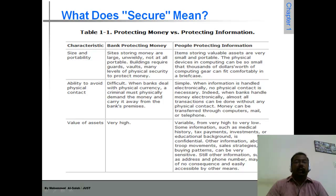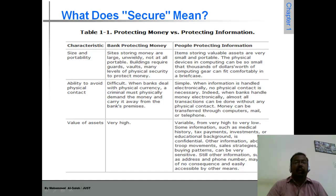Next is the ability to avoid physical contact. In case of money it is very difficult. When the bank stores physical currency, a criminal must physically demand the money and carry it away from the bank's premises, so it is a difficult task. In case of information, it is simple. When information is handled electronically, no physical contact is necessary. Indeed, when banks handle money electronically, almost all transactions can be done without any physical contact — money can be transferred via computers, mail, or telephone.